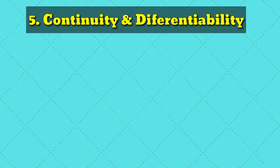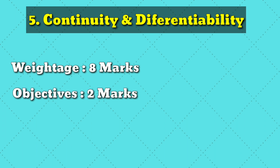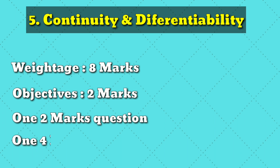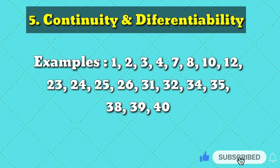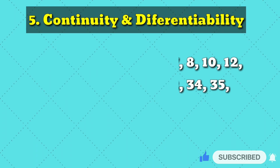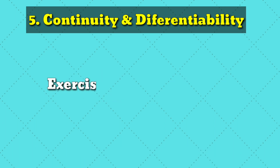Now Chapter 5, Continuity and Differentiability. Its total weightage in the exam paper is 8 marks — you will get 2 objective marks and 4 marks for other questions. First, all the examples are very important, please mark them. Now Exercise 5.1 — mark more questions here because continuity is always coming in the exam.